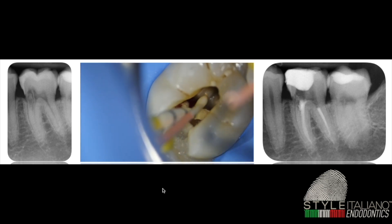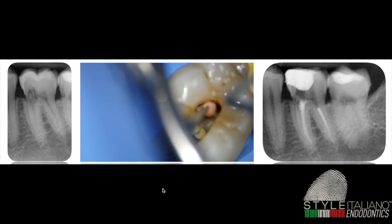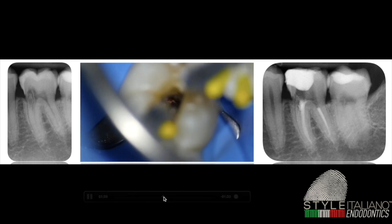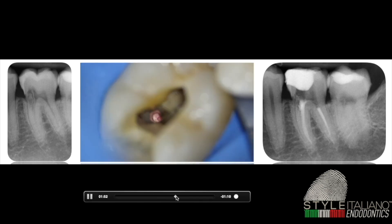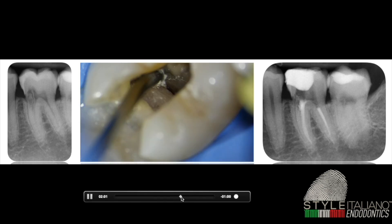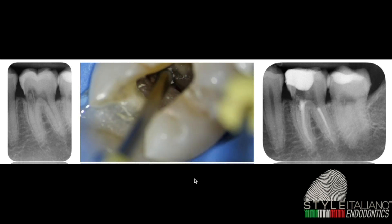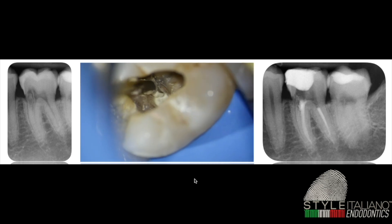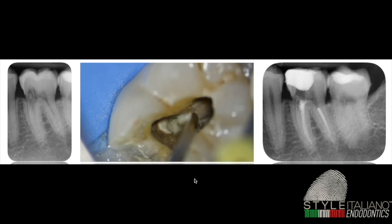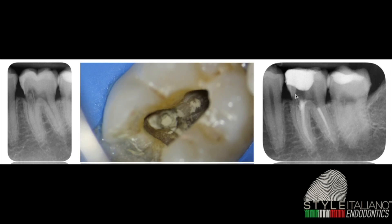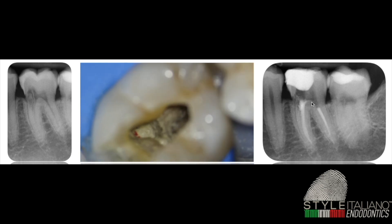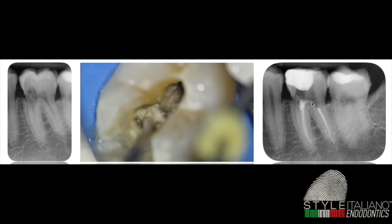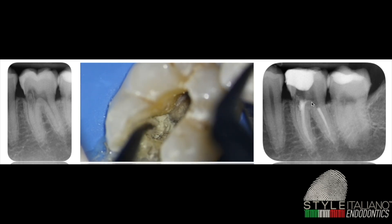We have no risk of extrusion of material apically because there is still bone externally. I made my root canal treatment and decided to try to fill the lesion with MTA. It was my first experience, so with the MAP system I placed the MTA in the internal part of this lesion. I filled completely the coronal aspect of the root canal system, and from the X-ray I understood that I had filled maybe part of the lesion, but was not able to fill completely the external part.